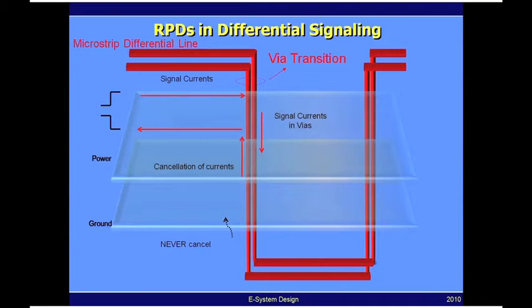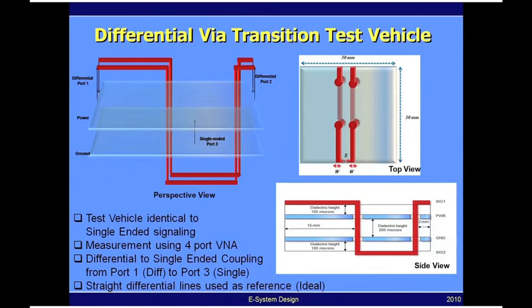Let me try to illustrate this through a very simple test vehicle. The test vehicle is identical to what I showed in the previous segment, except that instead of single-ended lines, you now have differential lines.